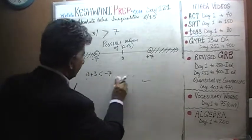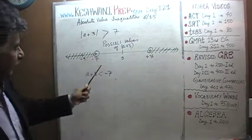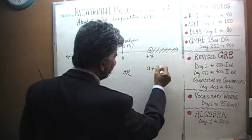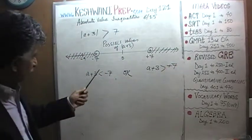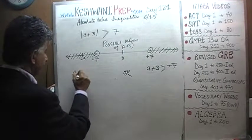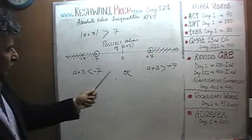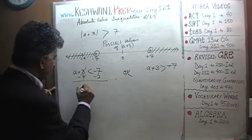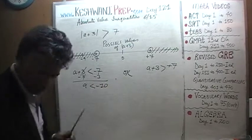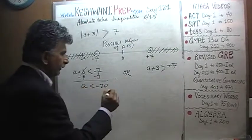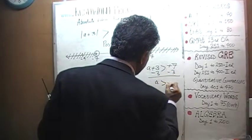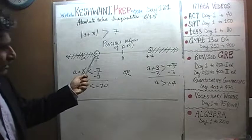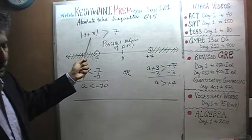So let's solve it. The absolute value of a plus 3 is going to be more than 7 if a plus 3 is either less than negative 7, or a plus 3 is more than positive 7. Subtract 3 from both sides: a has to be less than negative 10, or a has to be more than positive 4. That was the intermediate step, showing the possible values of the quantity inside the absolute value sign, not a itself.